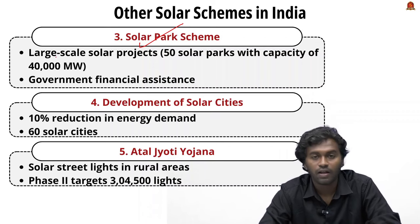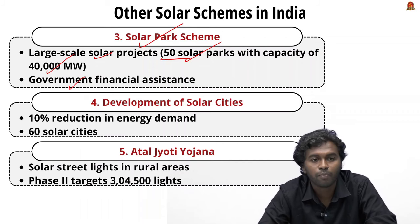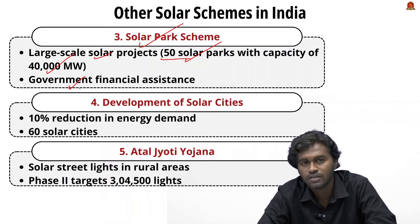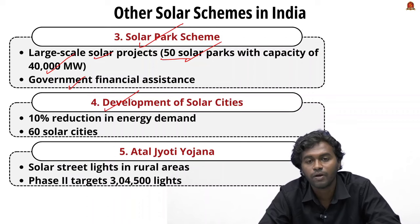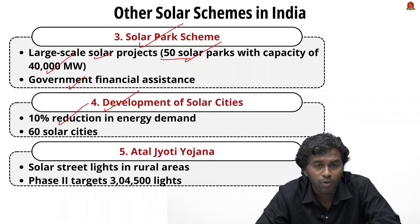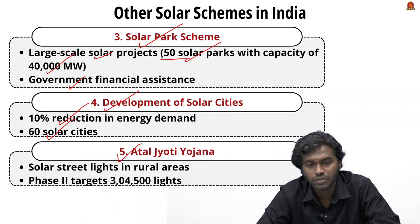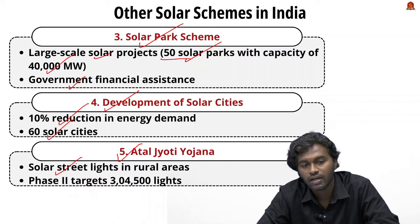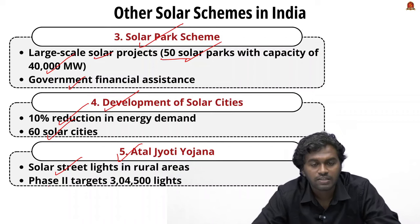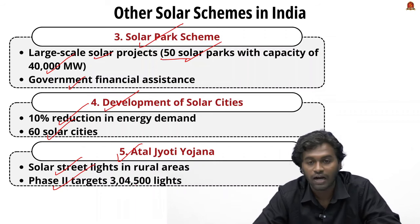The Solar Park Scheme aims to facilitate large-scale solar projects through solar parks, with a target of setting up 50 solar parks with a combined capacity of 40,000 megawatts. The central government provides financial assistance to states for this. The Development of Solar Cities scheme aims to reduce energy demand by 10% in selected cities by promoting renewable energy, targeting 60 solar cities across India. The Atal Jyoti Yojana Phase 2 targets installation of 3 lakh solar street lights in remote and underserved areas.